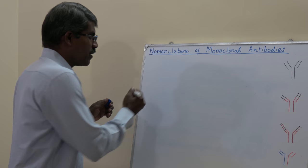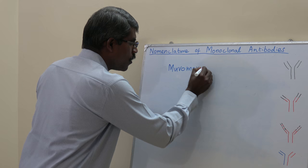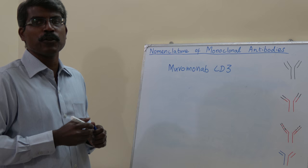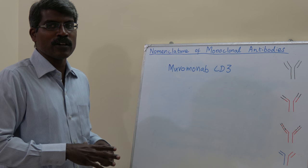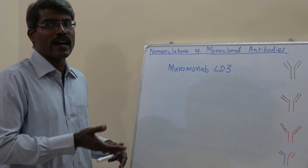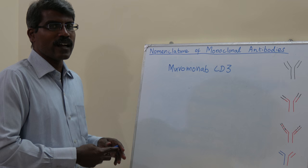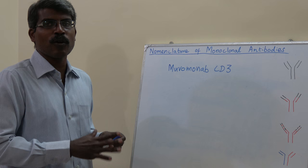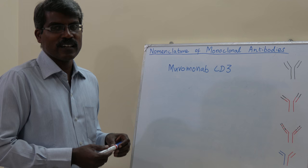Muromonab was the first monoclonal antibody to be formed. When it was created, there was no established nomenclature system, and no one anticipated that monoclonal antibodies would become such a large drug class. So when the nomenclature was later developed, the name was never changed. It ends in '-nab' rather than '-mab'.